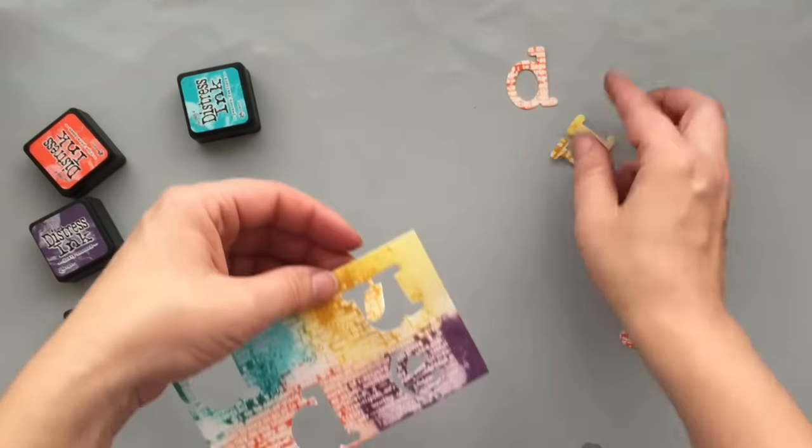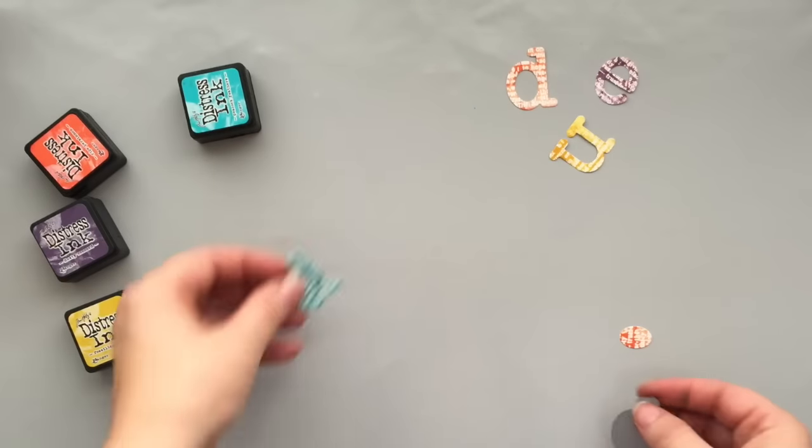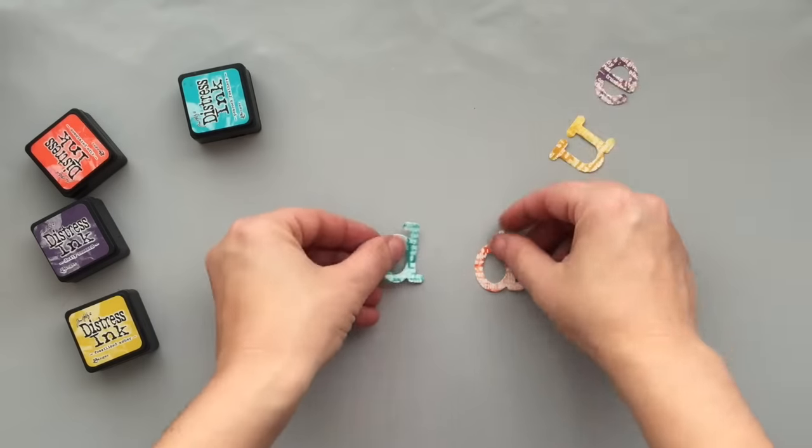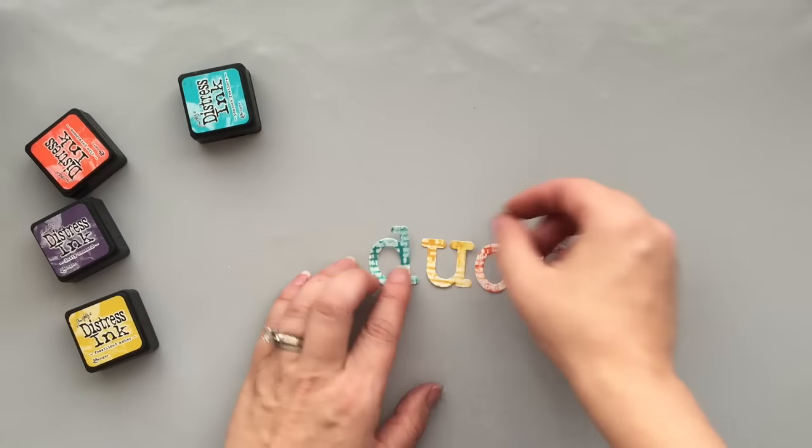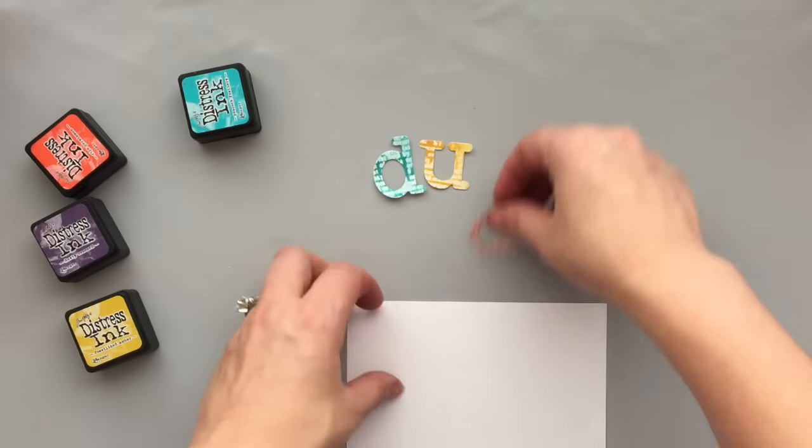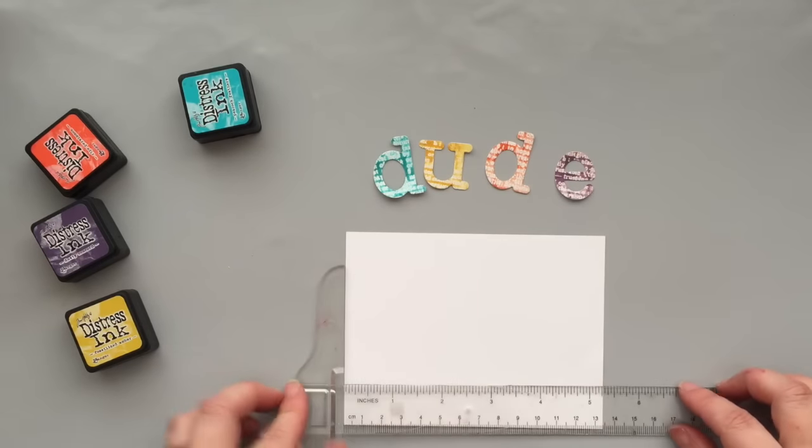I went ahead and ran that through my die cutting machine and you're left with these super fun letters with that design in the background. I like all the different colors. Now it's time to just assemble the card. The card is going to be pretty simple because I wanted these fun letters to be the highlight here. I say dude all the time. I don't know why, I just do. I catch myself saying it all the time.